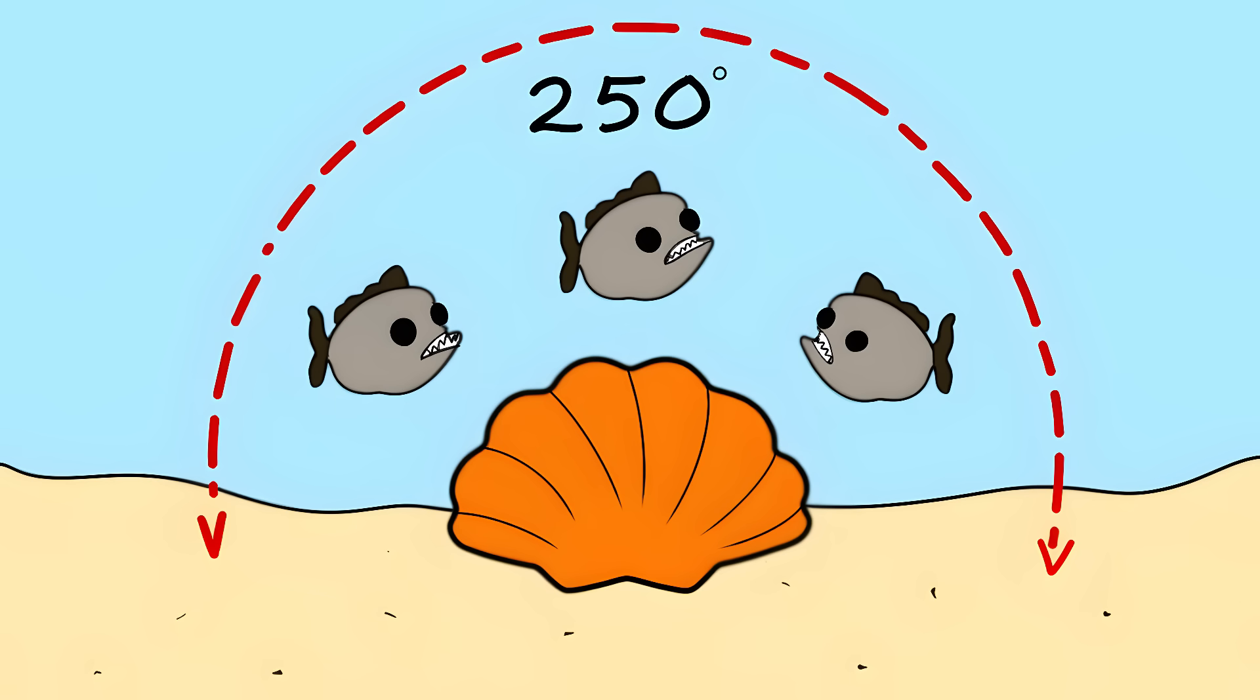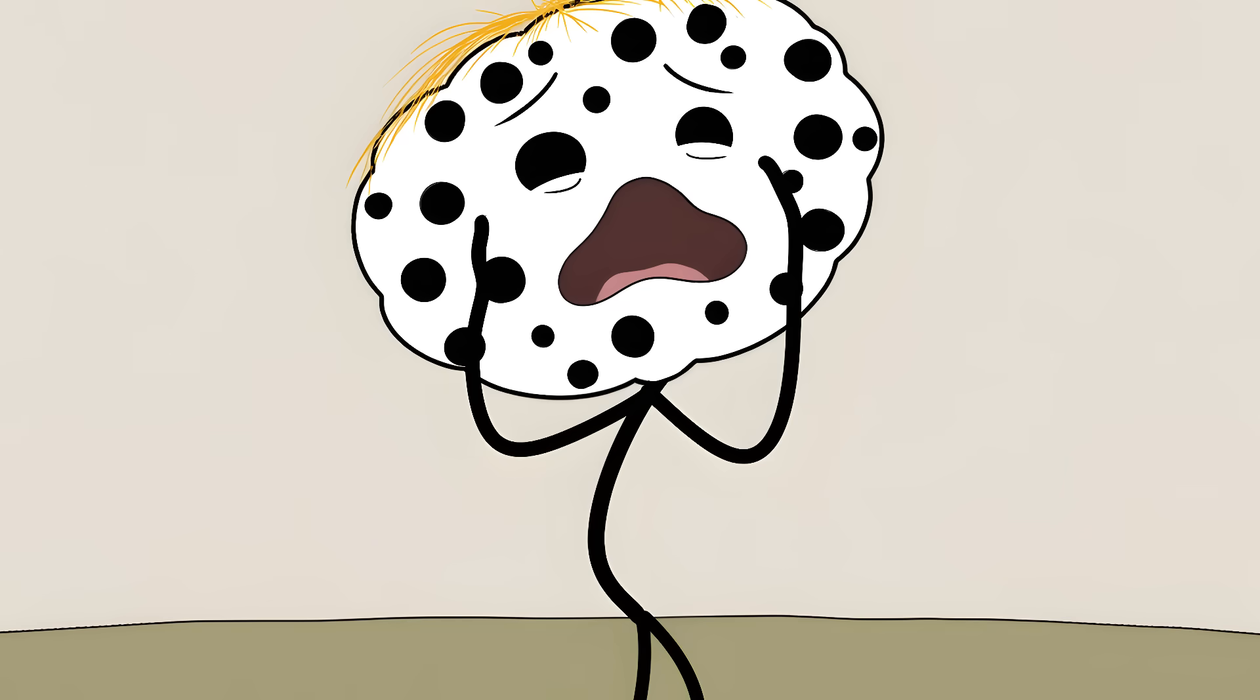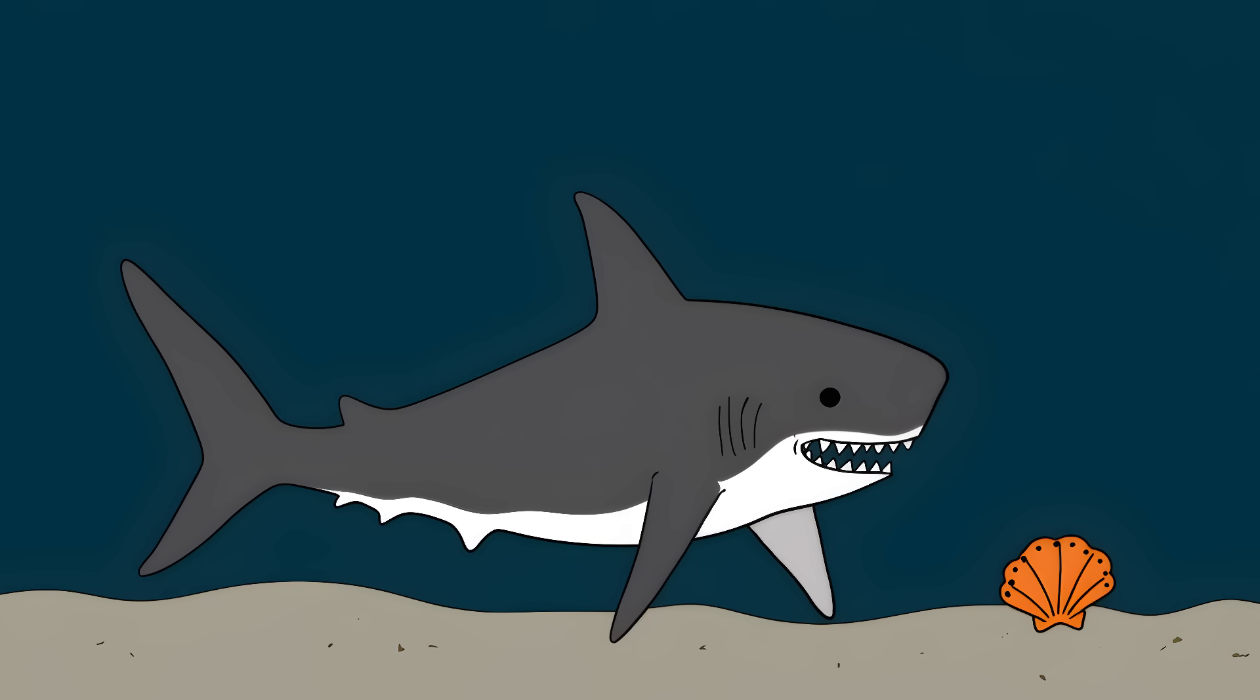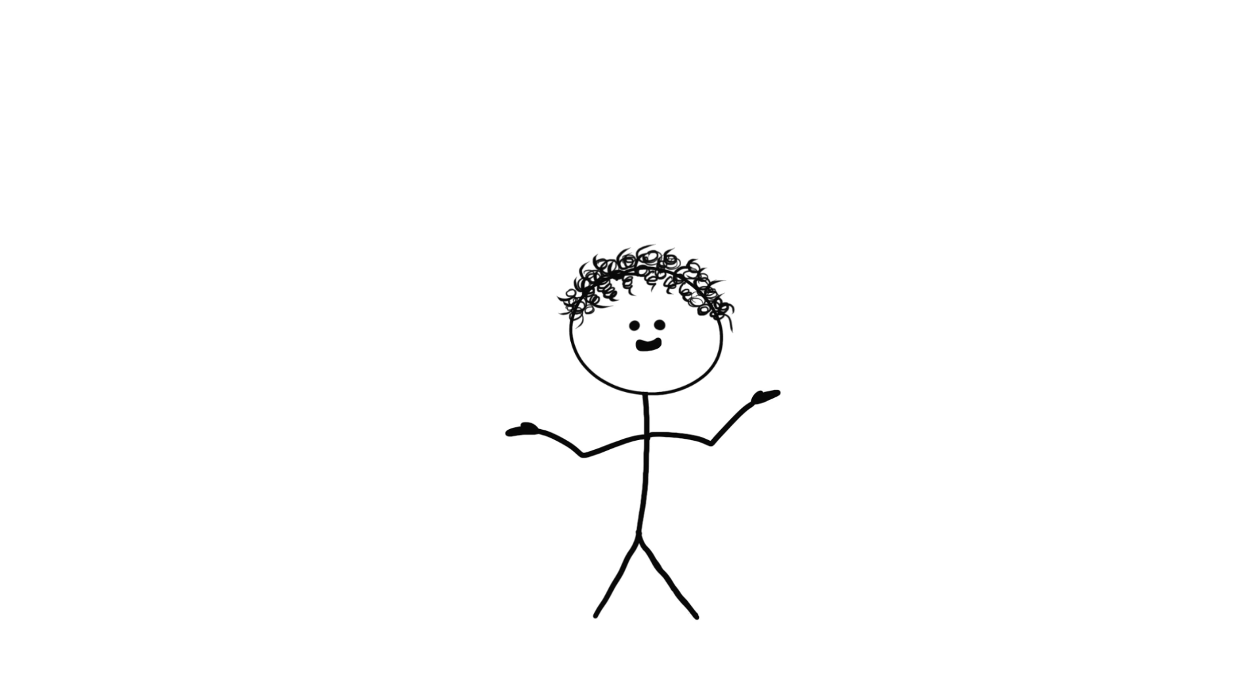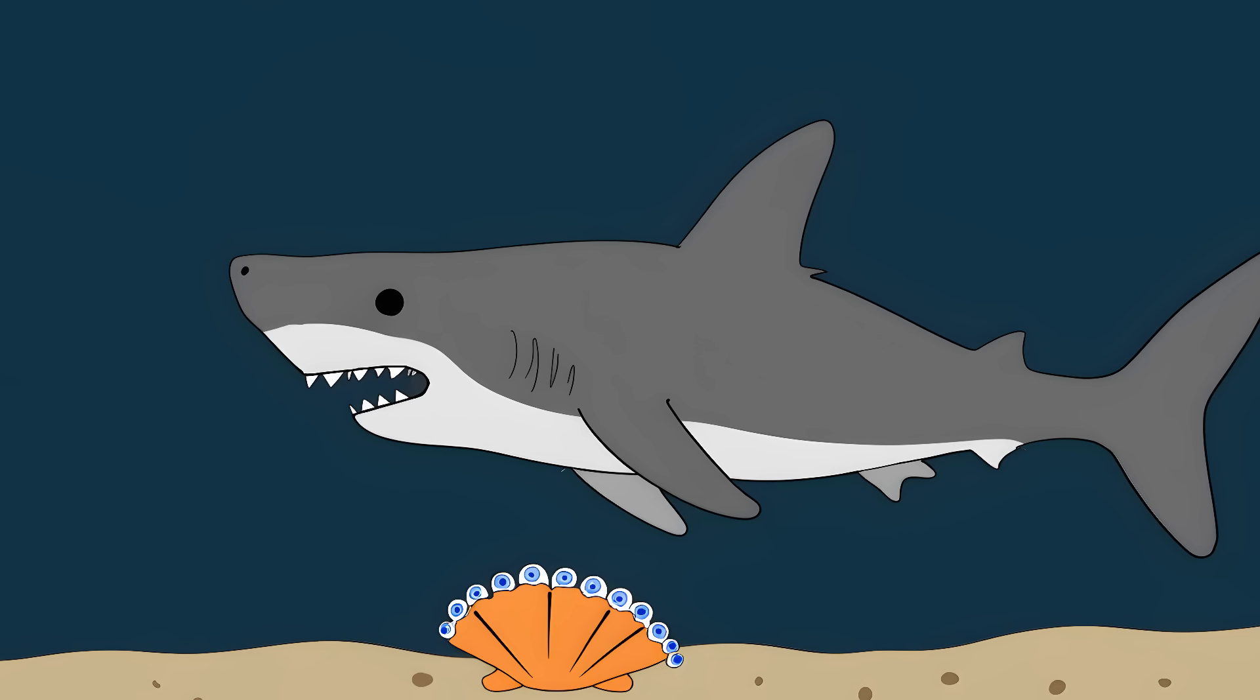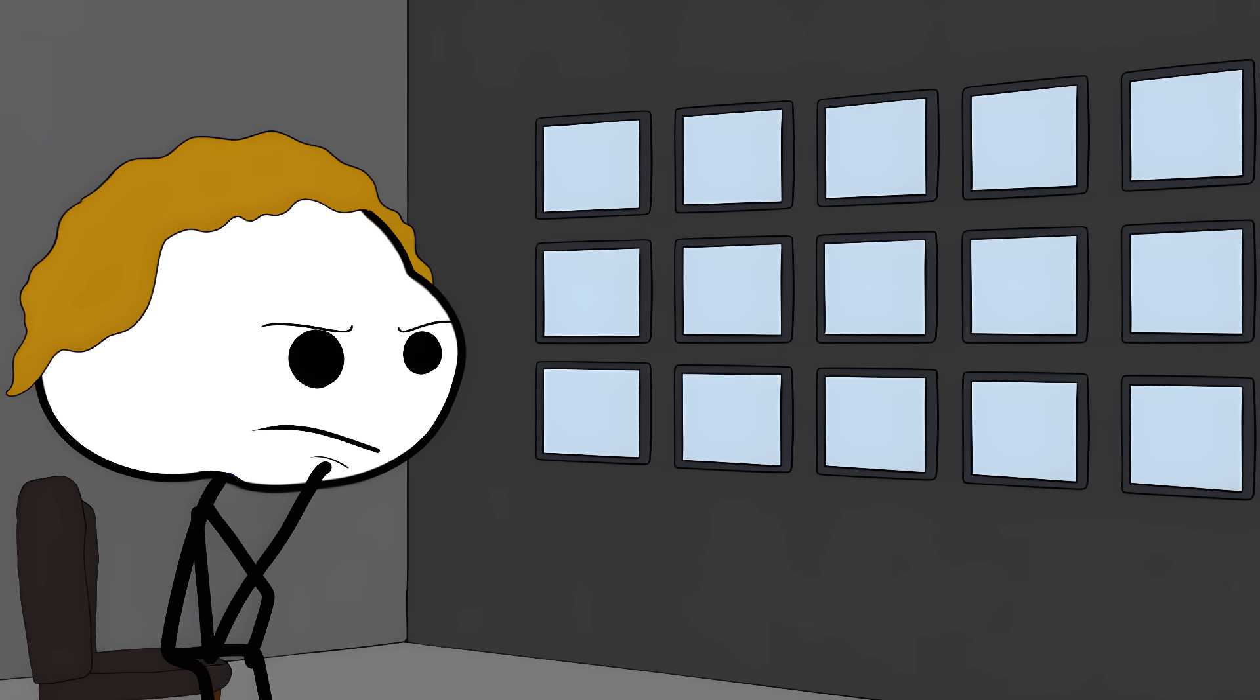These little guys can see almost 250 degrees around them. That's like having eyes in the back of your head, on the sides, and pretty much everywhere else. Picture being a predator trying to sneak up on a scallop. You think you're being super stealthy, but this thing has already spotted you with about 50 different eyes before you even got close. It's like trying to surprise someone who's watching 200 security cameras at once.